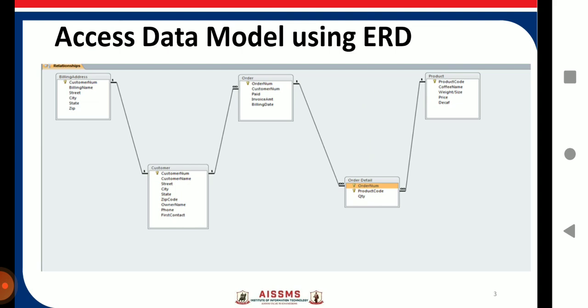So here I have taken one example that suppose I have to build one database and there are some of the tables which I am going to consider like billing address, customer, order, order detail and the product. So in this way I can show the relationship between those tables. So this is an example of a data model using the ER diagram.